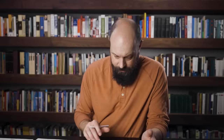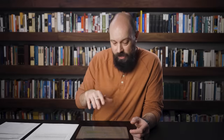Document three is from the Ottoman Empire, talking about the necessity of building a railway system. The reason is that Muslims going on pilgrimage are either having to use foreign ships on which they are subjected to humiliation, or travel by camel, which is very challenging. This one is similar to the Qing document, because the railway must be built with Muslim involvement only — financed by the Islamic world and recruiting Muslim engineers. So this is another document about consolidating power at home, and in building this railroad they're going to rid their empire of foreign influence.